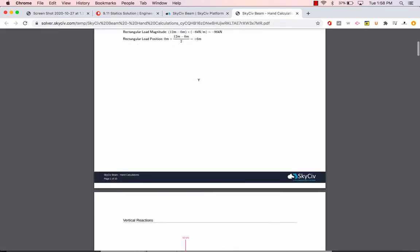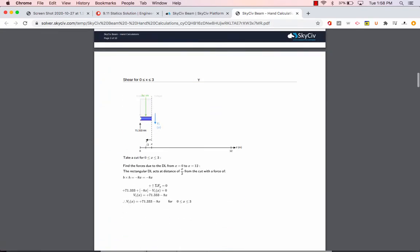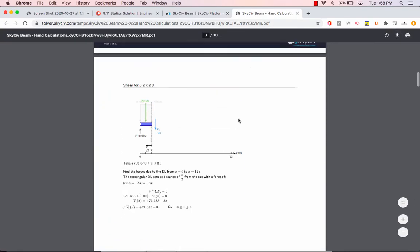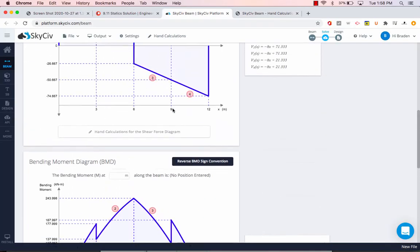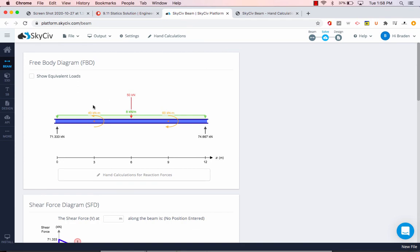It basically takes all the information that we just scrolled through and puts it into a nice PDF that you can save or print or do whatever you want with as well. So yeah, it's super easy, really fast and intuitive for putting in the reactions and the loads. I like using it. It's really great to check your work.